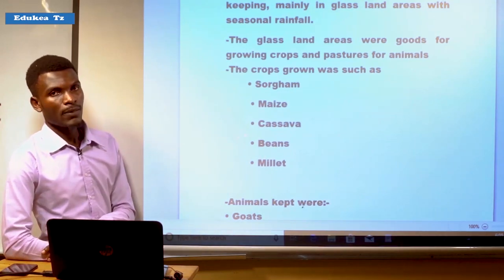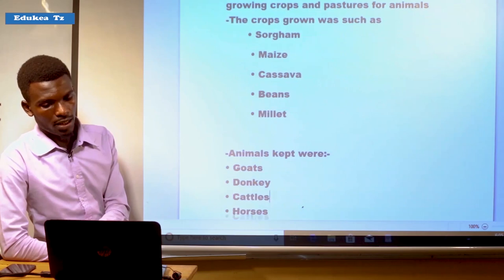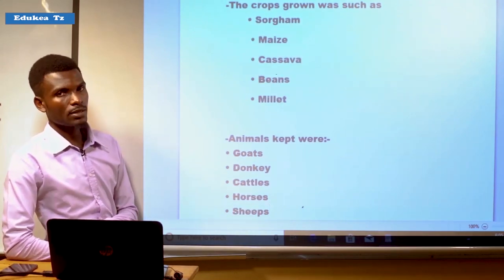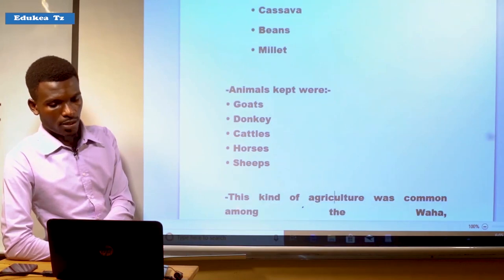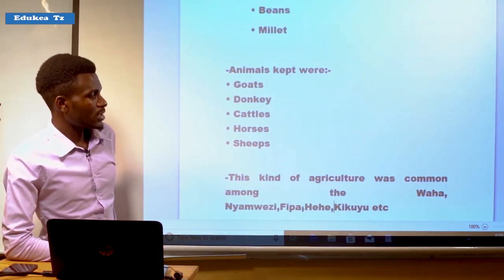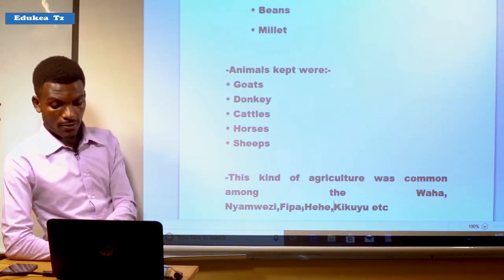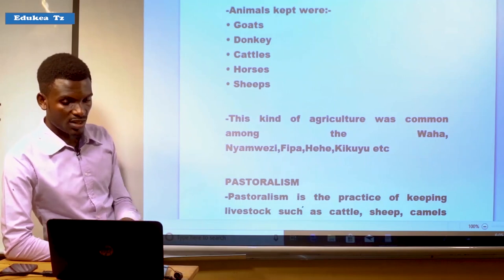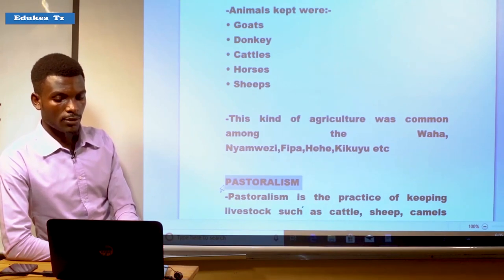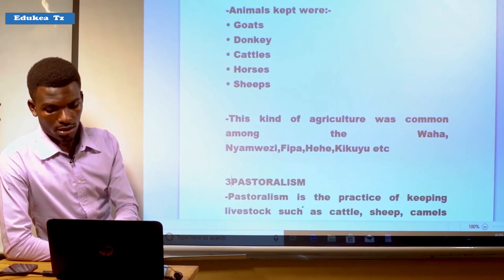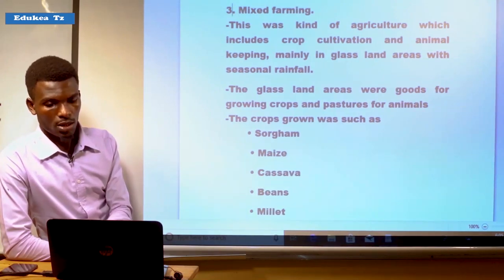The animals kept in mixed farming were goats, donkeys, cattle, horses, sheep, and others. This kind of agriculture was common among the Waha, Nyamwezi, Fipa, Hehe, and Kikuyu. These were the societies and areas where mixed farming was taking place during the pre-colonial period in Africa.